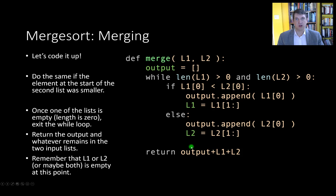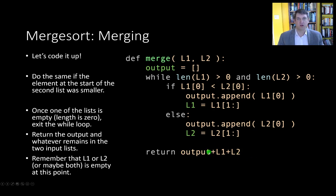All that remains is to return the output list. Using Python syntax, we return output plus l1 plus l2. One or more of those lists will be empty, but adding an empty list to a list doesn't change it. So if l1 is empty but l2 has something in it, we just get output with l2's elements appended. This is just appending whatever was left in l1 or l2. It's just a while loop with one if statement and then we return the output list.